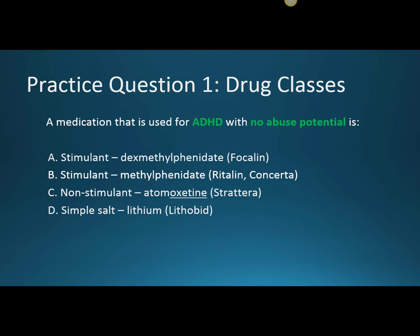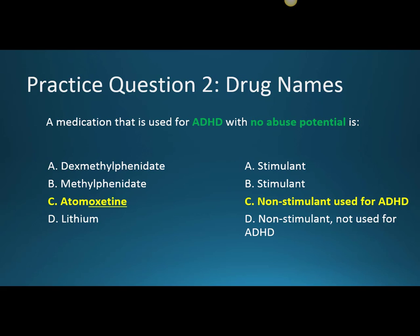Let's work through some practice questions. Question one: a medication that is used for ADHD with no abuse potential is? A is dexmethylphenidate, B is methylphenidate, C is atomoxetine, and D is lithium. The correct answer is C, atomoxetine. This is the only non-stimulant medication approved for ADHD. A and B are incorrect because those are both stimulants, and D, lithium, is incorrect because although it is a non-stimulant, it is not used for ADHD.